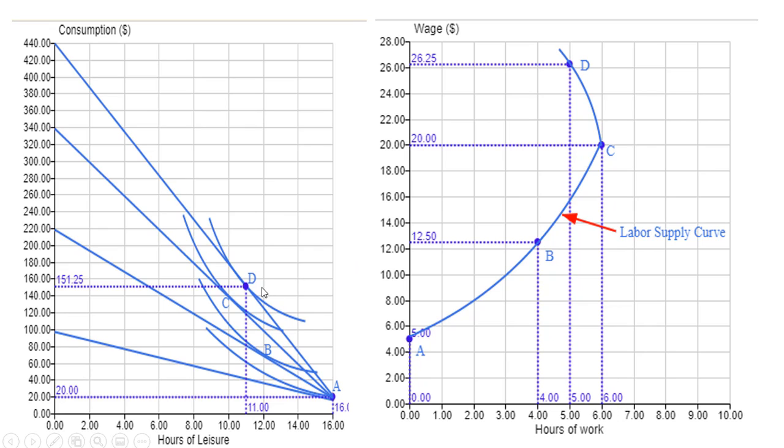And finally, at point D, the wage increased even more. Now it increased to $26.25. Remember that the slope of the budget line here, ignoring the minus sign, is just the wage. And so at point D, the person is taking 11 hours of leisure with 16 hours in the day. That means five hours are allocated to work. So here is the person's labor supply curve. And as I mentioned before, it does bend backwards here.